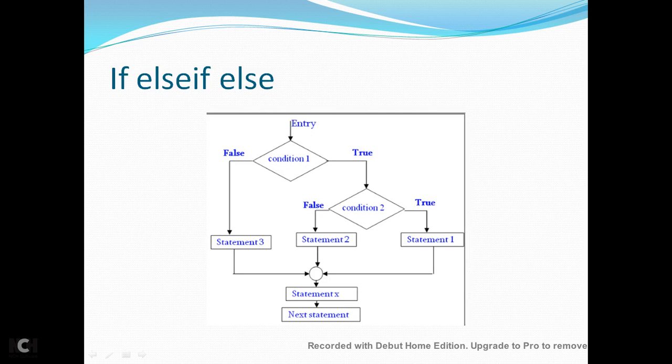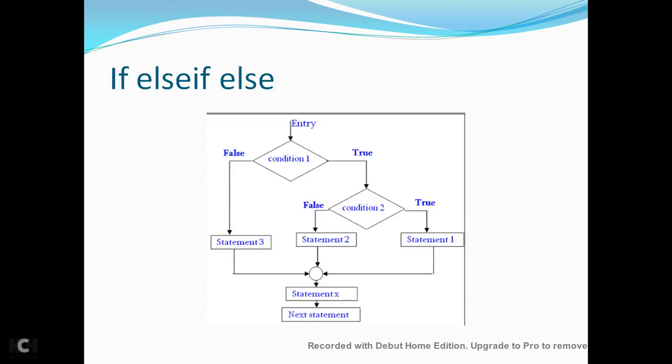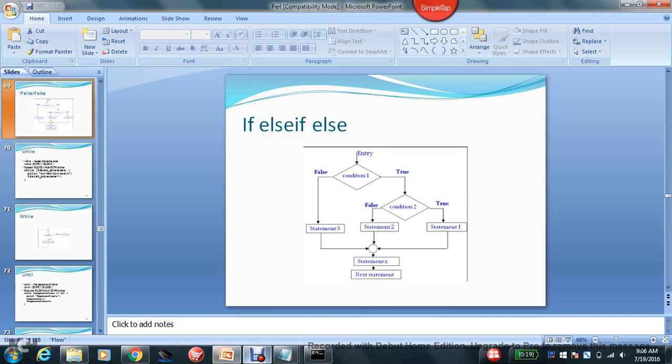So here is the if else statements. If at the entry, if the condition is true, then it goes to true condition. Then again, it checks for the other second condition, then it is true statement execution. If it is false, then other statements and so on, the iteration will take place. So if you are going to have multiple conditions and multiple checkpoints, then you can use if else if. So that's how the if statements will work and the next topic will cover the while loop.